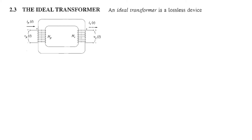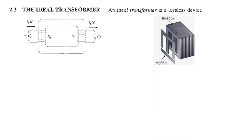I am sure by now you know what a transformer is. We have a core and windings on the primary side and then windings on the secondary side. This gives us primary voltage, primary current, and number of primary turns. Similarly, secondary voltage, secondary current, and number of turns in the secondary. The core is made of steel materials — slices of steel — and this is to reduce eddy current losses.